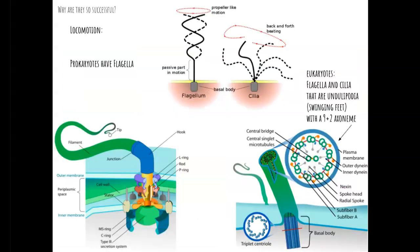Another reason prokaryotes are so successful is because they are able to move. They use their flagella to move into areas that have more food or better conditions for survival. They whip the flagellum around in a propeller-like motion, in either a clockwise or counterclockwise direction, to change direction and allow them to move.